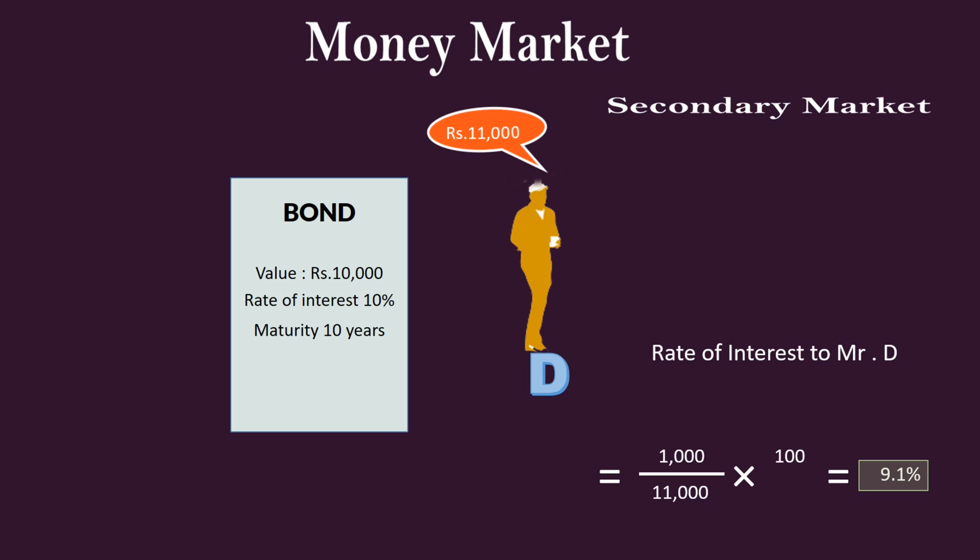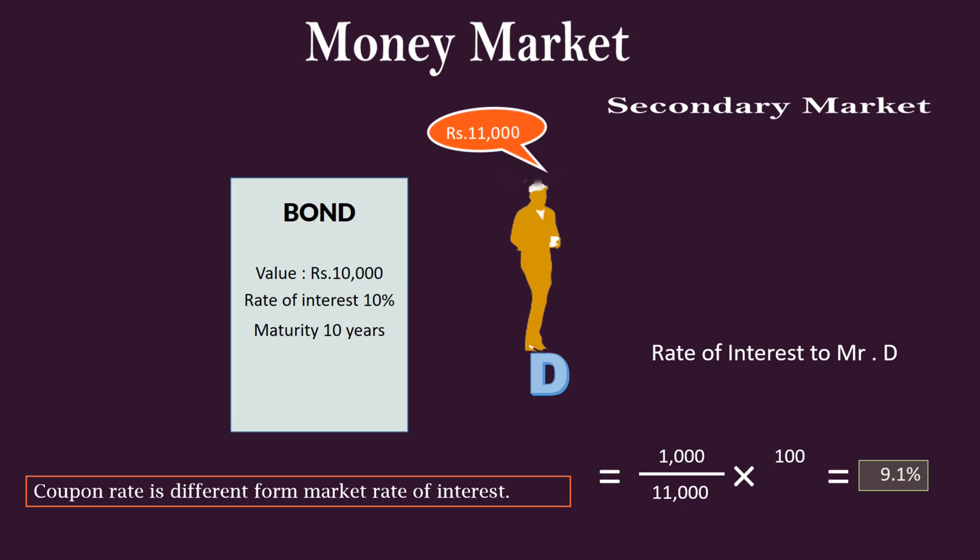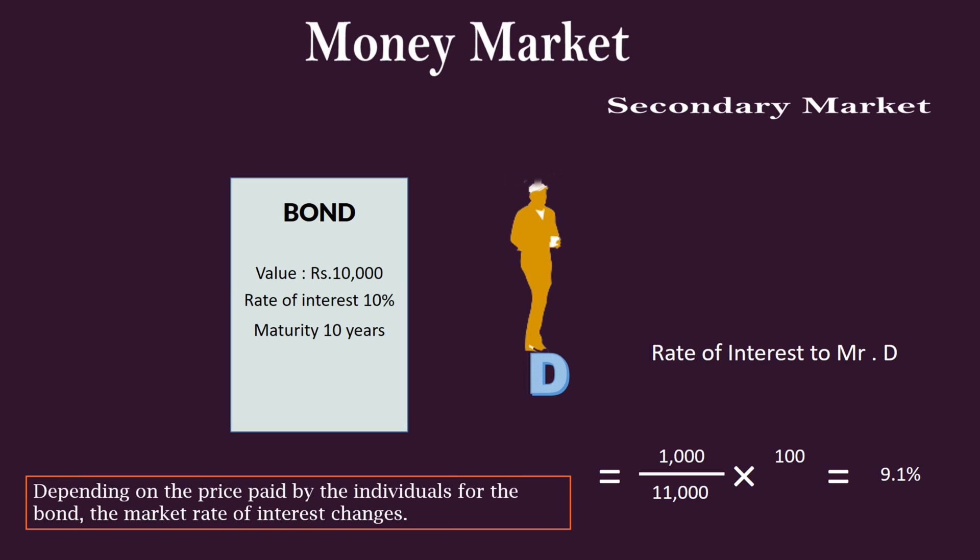This is how market evaluators calculate the market rate of interest, even though the enterprise which floats the bond keeps paying only 1,000 rupees to whoever is the owner. What we discussed is an oversimplified case; in reality this activity is carried out by the community at the national level. What is important to our discussion is: the coupon rate of interest is different from the market rate of interest. The coupon rate will never change, but depending on the price paid by individuals for the bond, the market rate of interest changes. This is the very foundation to understand the Liquidity Preference Theory of Interest.